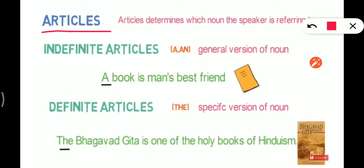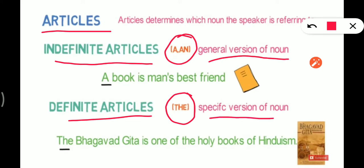So first of all, articles. What is an article? You know in your previous classes you will have learned about articles. So I am not going to tell you about that. Let me tell you, articles determine which noun the speaker is referring to. Now there are two types of articles: indefinite articles and definite articles. Indefinite articles are A and AN, and definite article is THE.